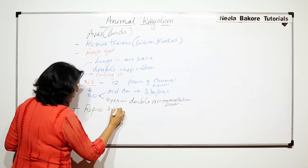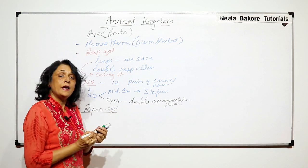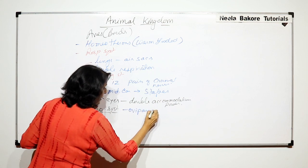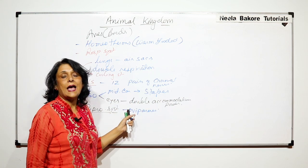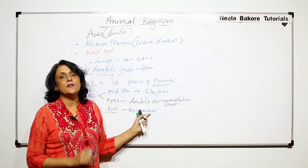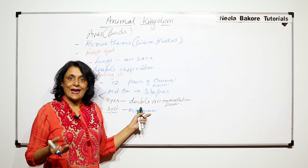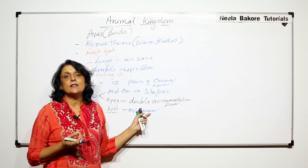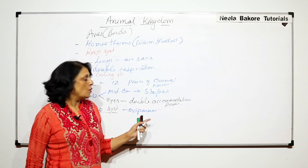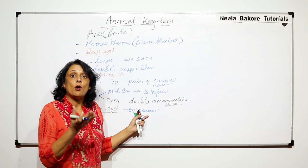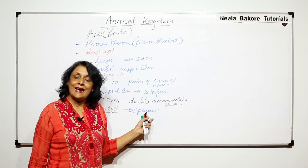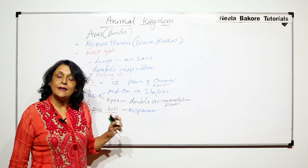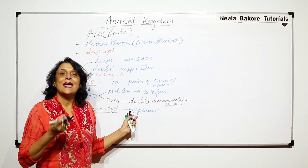Now let us talk about the reproductive system. We know that birds are oviparous — they lay eggs. This is also a flight adaptation discussed in the previous video. If birds were viviparous, they would carry the embryo in the body, which would make their body heavier. So they lay eggs so that they don't have to carry that weight with them.